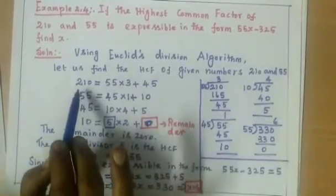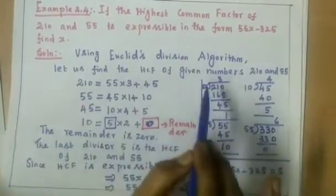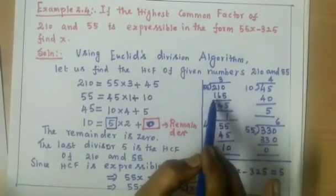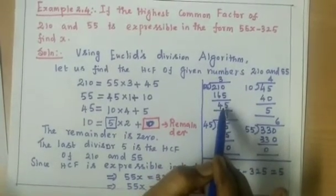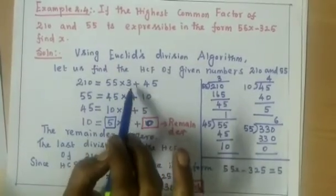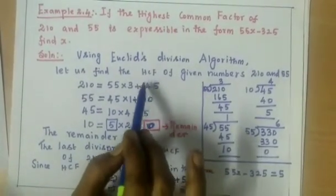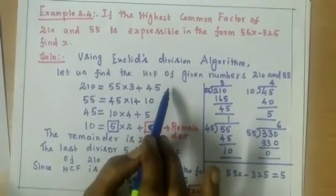So 210 you write equal to, divide by 55 means 3 times 55 is 165, remainder is 45. So 55 into 3 plus 45, remainder is 45, remainder not equal to 0.